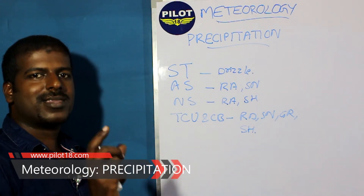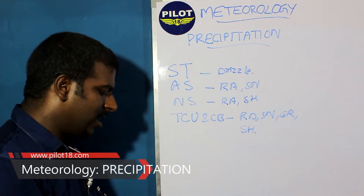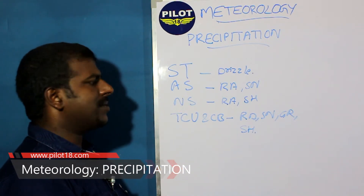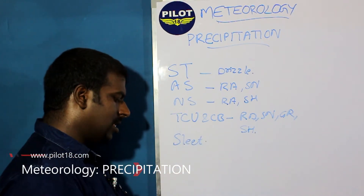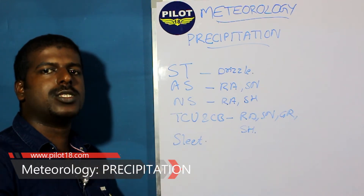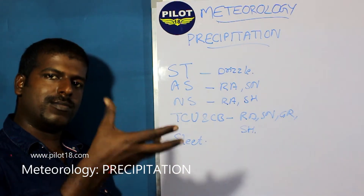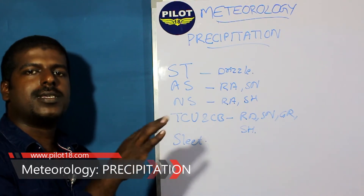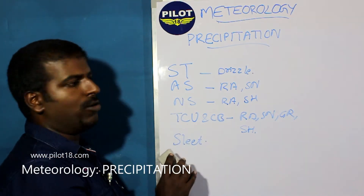That is why CB clouds are considered one of the most dangerous clouds in aviation. Regarding sleet: sleet is a mixture of water drops and snow and ice particles, whereas snow is of uniform composition of ice particles only. Sleet can also come from towering cumulus and CB clouds.